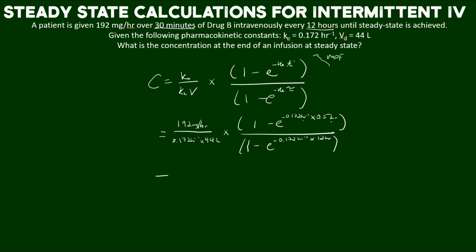If we calculate all of this and put it into our calculator very carefully, the final answer we get is 2.39 milligrams per liter, which is really our C max at the end of an infusion at steady state. When we're at steady state, we incorporate the infusion rate along with tau and infusion time, if it's an intermittent infusion, to calculate a given concentration. Thank you for your attention.